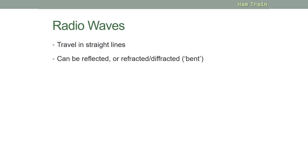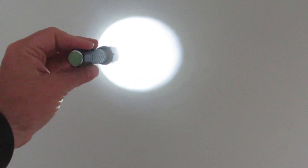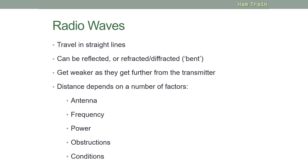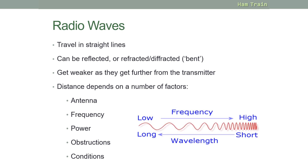Radio waves travel in straight lines, just like light. Radio waves can be reflected, refracted, or diffracted — that is, bent. Radio signals get weaker as they travel further from the transmitter. The distance that radio waves travel can depend on a number of factors including the type of antenna, the transmitted frequency, the power of the transmission, any obstructions in the way, and conditions such as weather. As radio frequencies increase, the wavelength decreases.